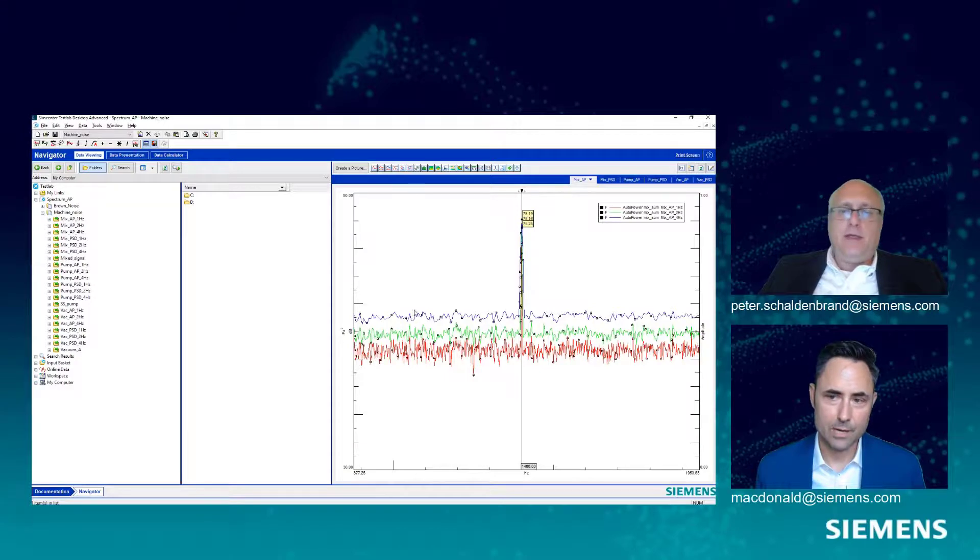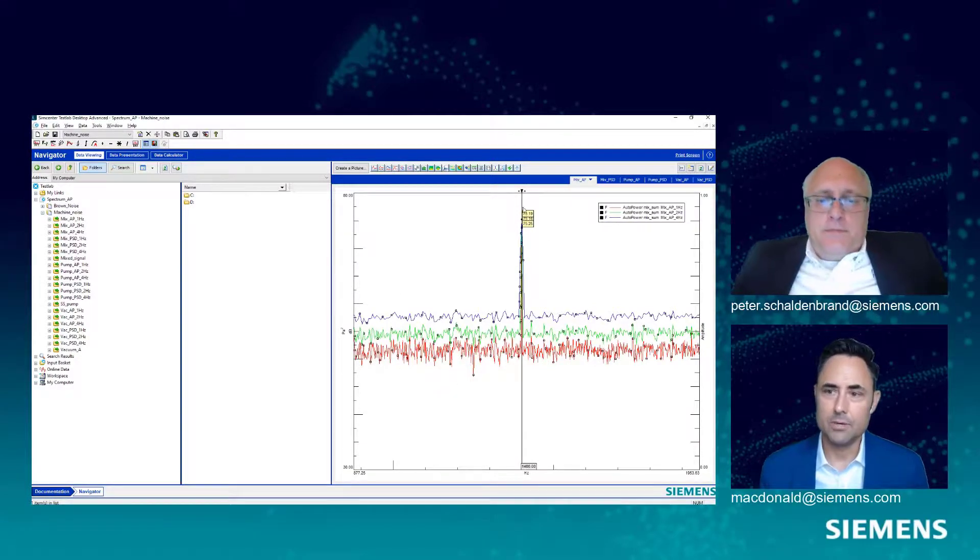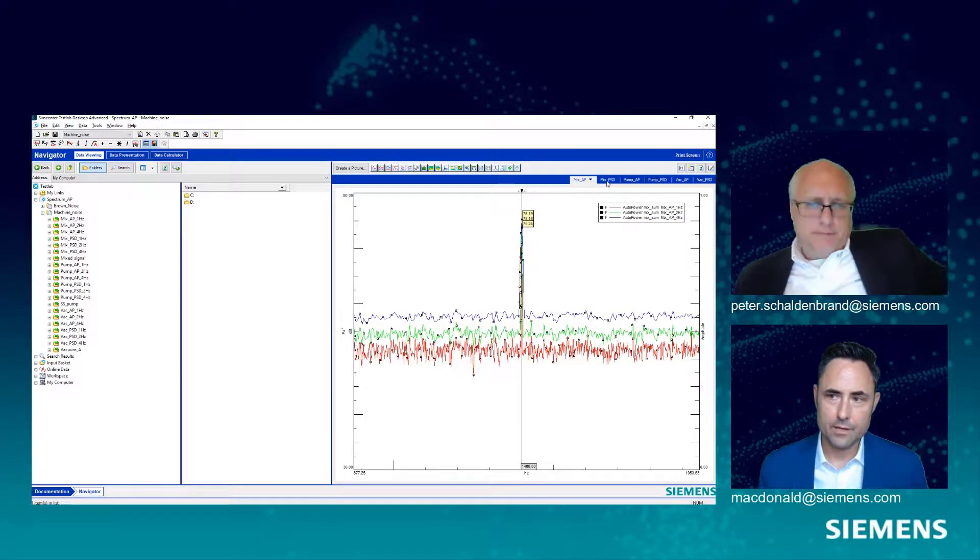This is an auto power. So it's screwing up the amplitude of the broadband part of the signal, but getting the tonal or the sinusoidal part perfectly right. Now, if I go to do a PSD to fix these broadband signal parts,